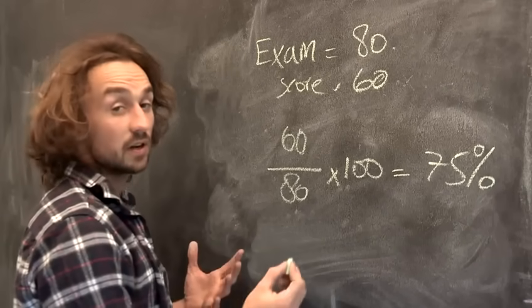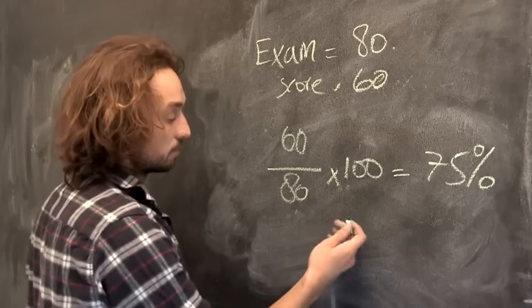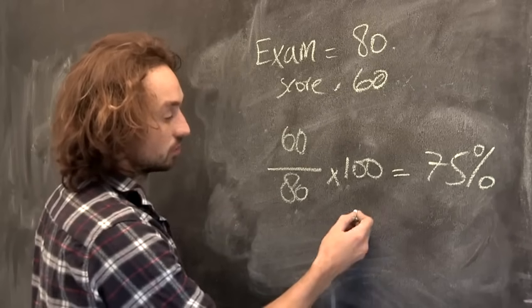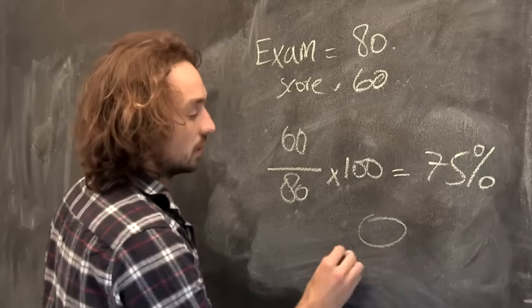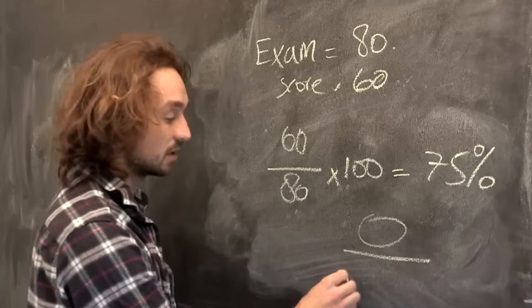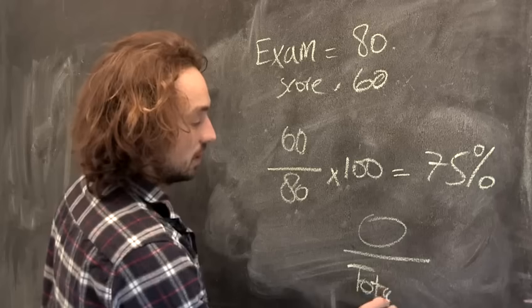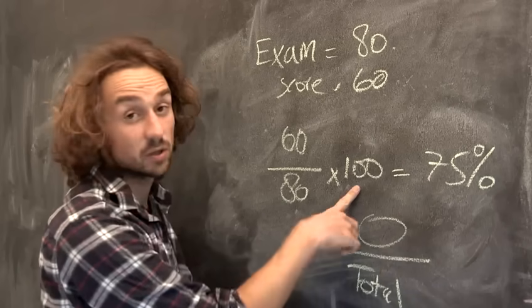So to find a percent, you take your score or the number that you've got, divide it by the total, and to put it into a percent you multiply by 100.